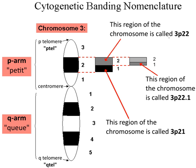Diploid and polyploid cells whose chromosomes have the same allele at a given locus are called homozygous with respect to that locus, while those that have different alleles at a given locus are called heterozygous.